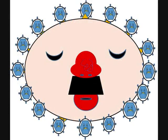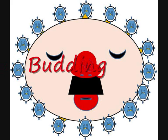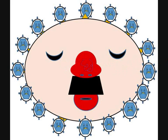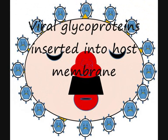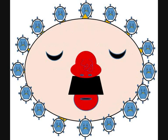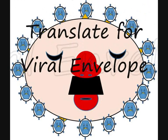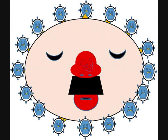Envelope viruses, on the other hand, adopt another strategy — budding. First, viral glycoproteins and proteins are inserted into target host membranes. Then, translation occurs from viral mRNAs coding for membrane proteins, instead of host cell mRNAs.